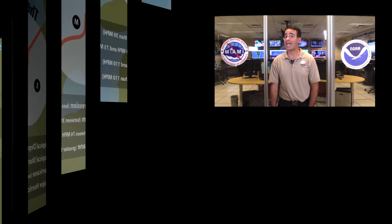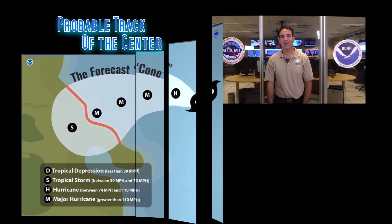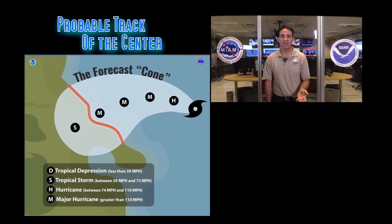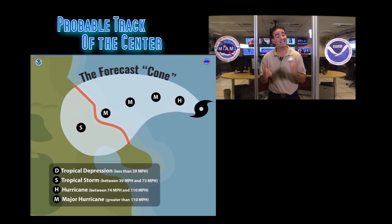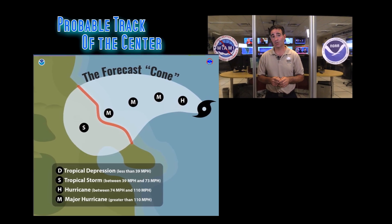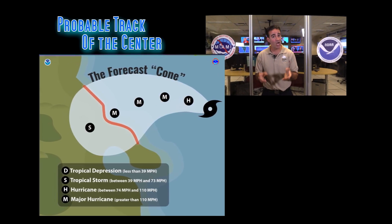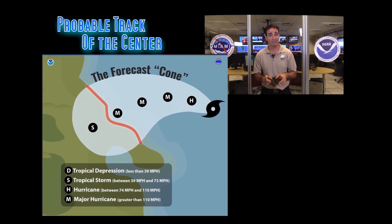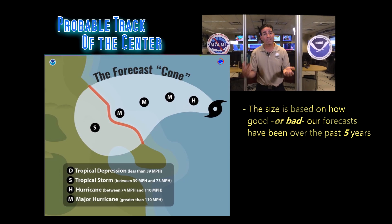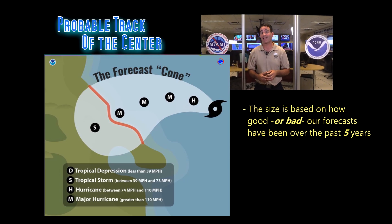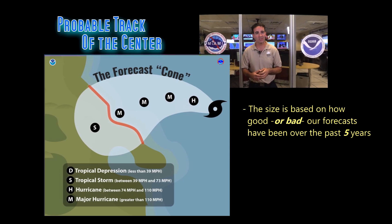Here is an example of the NHC forecast cone. The cone represents the probable track of just the center of the storm — just the center.